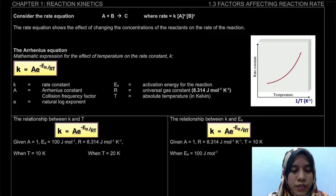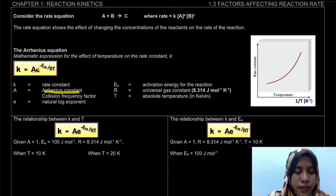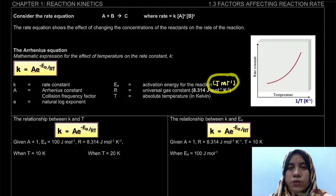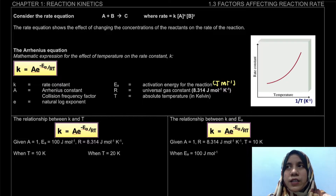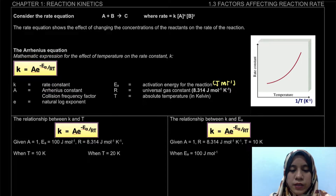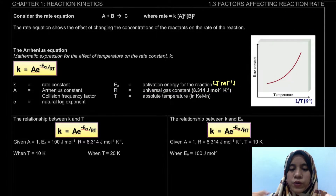So what is the Arrhenius equation? In the equation, A stands for the Arrhenius constant, and e is the natural exponential. Negative Ea is the activation energy, where the unit must be in joule per mole — please write that in your notes. Sometimes questions ask for activation energy in kilojoule per mole, so you have to divide by 1,000 when substituting into the formula. R is the universal gas constant, 8.314 joule per mole per Kelvin.